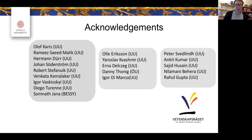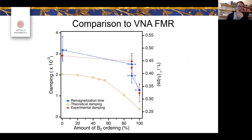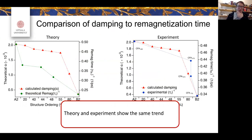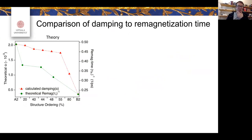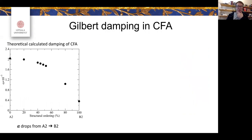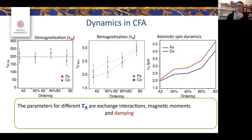The main advantage of using high harmonics compared to optical light — which I wanted to mainly show experimentally — is that you can get this separation of the demagnetization between iron and cobalt, which you cannot get using optical light.